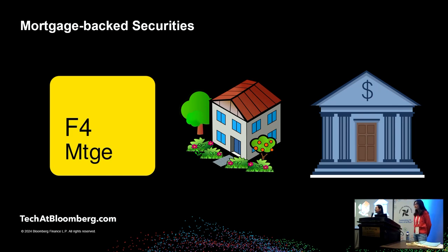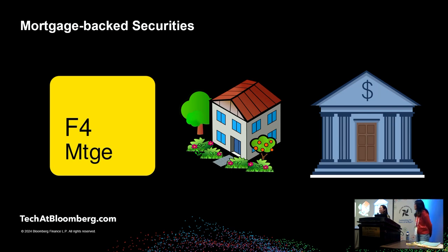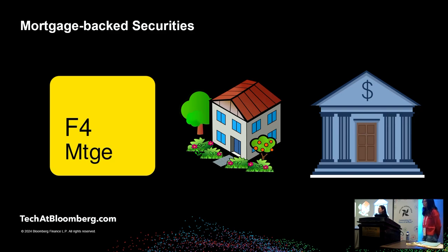The bank has to keep track of this loan for 15 or 30 years — a lot of data points accumulating every month. Banks can also choose to sell this stream of cash flow, which helps free up capital so they can help their next customer buy a home. For a lot of residential mortgages, there are three government agencies that will buy up many of them. These agencies can hold the mortgages or create new securities called mortgage-backed securities based on them, which is what we do.